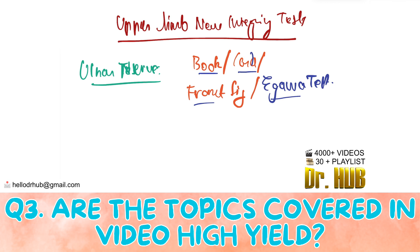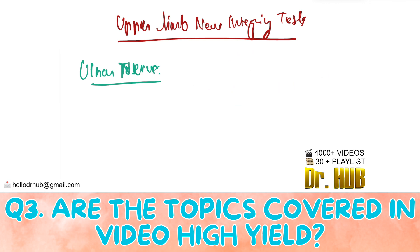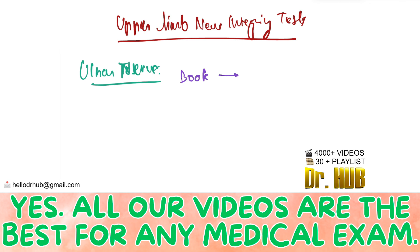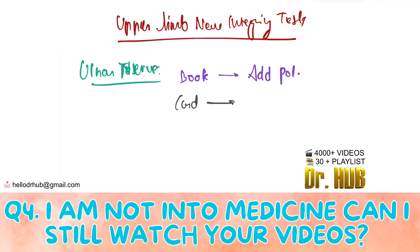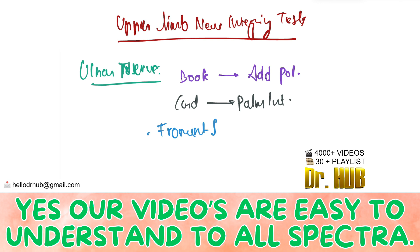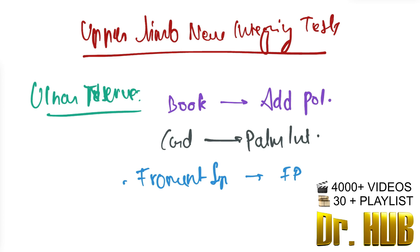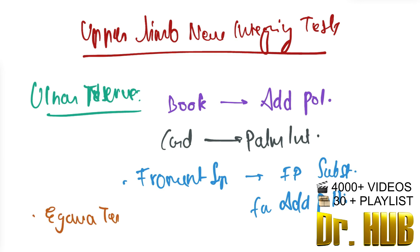Let's write it clearly. The book test is associated with the adductor pollicis. The card test is associated with the palmar interosseum. The Froment sign is associated with the flexor pollicis longus, which substitutes for the adductor pollicis.